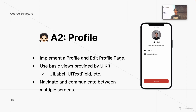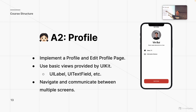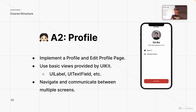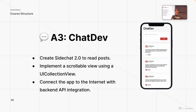The second assignment has you creating a profile page, where you'll learn the basics of UIKit and how to create basic views. For example, it has an image view representing a profile picture, as well as UI labels for text. You can also push a new screen and go back, and it includes text fields. It seems basic but it is an intro class, and it covers the core UIKit fundamentals.